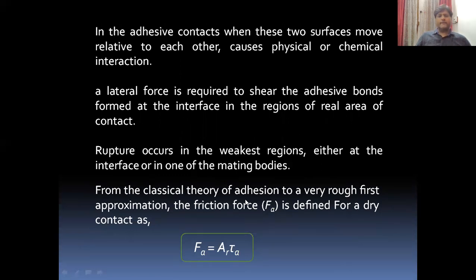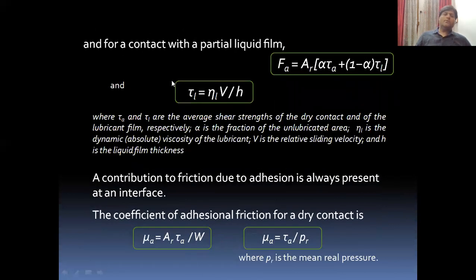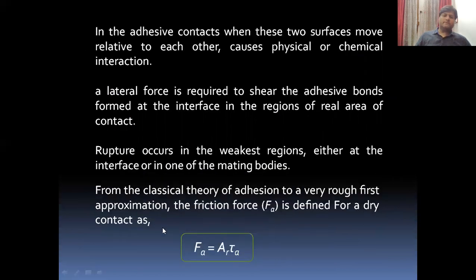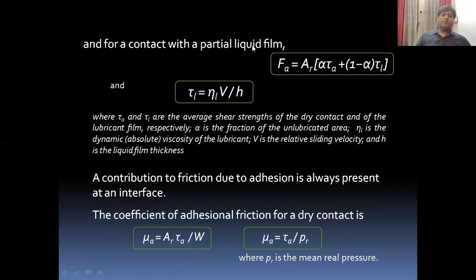From the classical theory of adhesion, the frictional force depends on the real area of contact and the average shear strength of the asperities. The average force of friction equals the real area of contact multiplied by τA (average shear stress). That is for the dry contact case. For a wet contact or partially liquid film, a modified equation is used that involves a constant alpha, the average shear stress of the asperities, and the shear stress of the lubricating film.